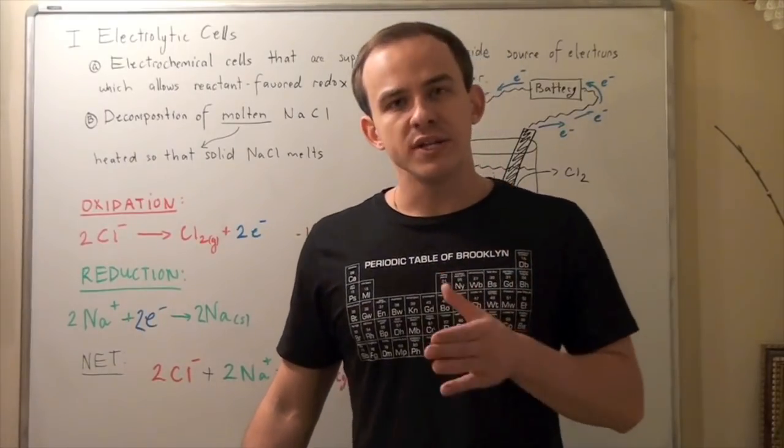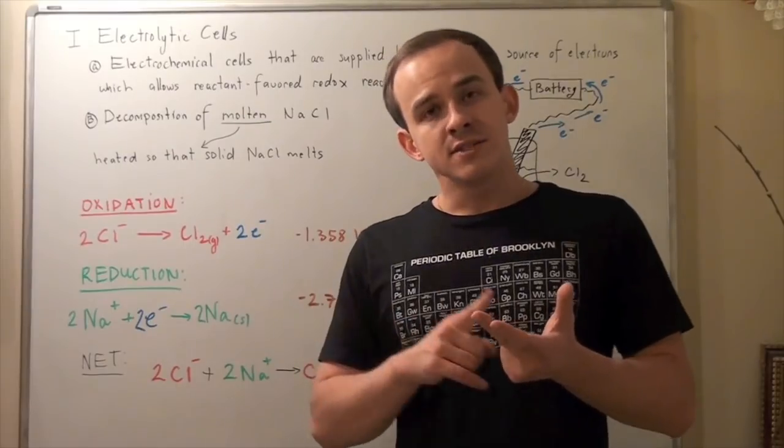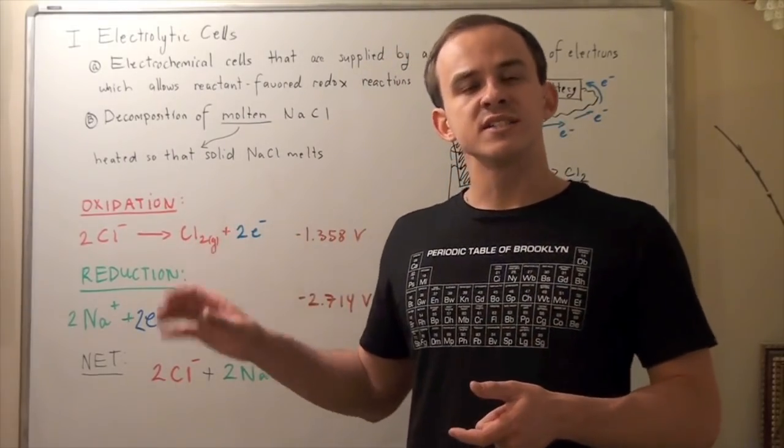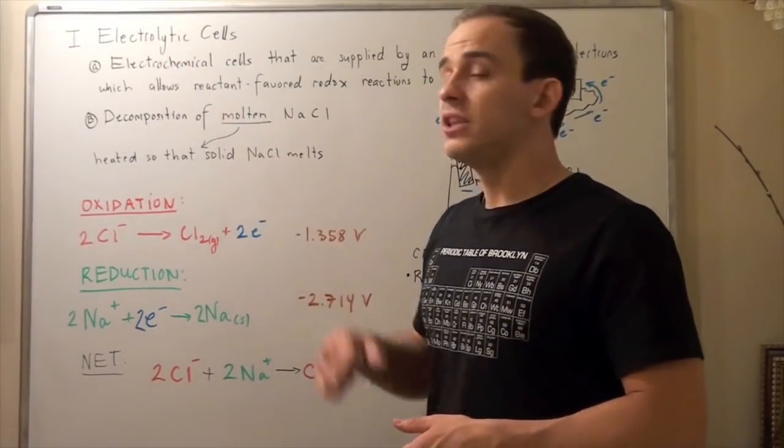So far, we have spoken about three types of electrochemical cells, namely voltaic cells, concentration cells, and fuel cells. Now, in this lecture, we're going to discuss a fourth type of electrochemical cell called an electrolytic cell.